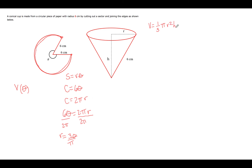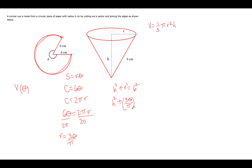Now we need h expressed in terms of theta. In this cone we have a right triangle formed, and using the Pythagorean theorem we can write h squared plus r squared equals 6 squared. We already know how to express r in terms of theta, so we write h squared plus the quantity 3 theta over pi, squared, equals 36.